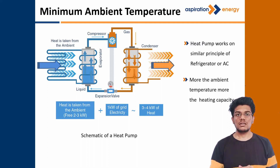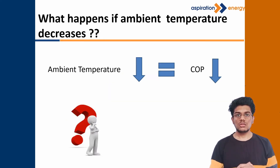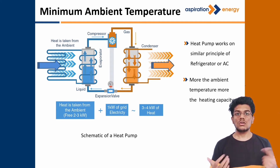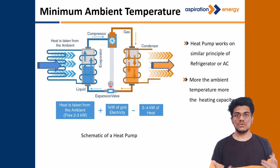Heat pumps are designed at a certain ambient temperature. The heat pump will meet the heating demand only at that ambient temperature or more than that ambient temperature. If the ambient temperature falls, one can achieve either the heating demand or the temperature output — if we achieve the temperature requirement, we cannot meet the heating demand at the low ambient temperature, and vice versa.